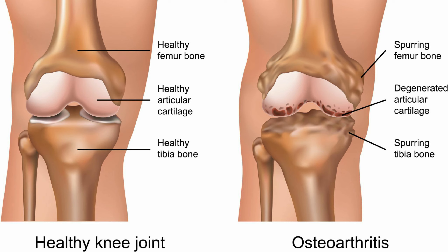Osteoarthritis usually affects the hands, knees, hips, and spine. It begins by affecting the cartilage in joints, making movement more difficult and painful. Once the cartilage thins out, the tendons and ligaments in the joint have to work harder, which often causes swelling. In severe cases, the wearing away of the cartilage can lead to bone rubbing on bone, which may alter the shape of the joint itself.